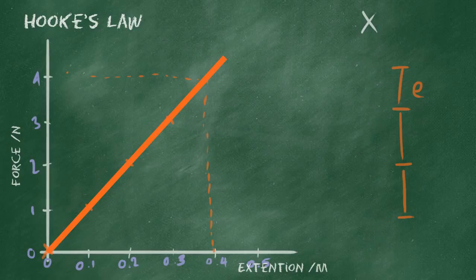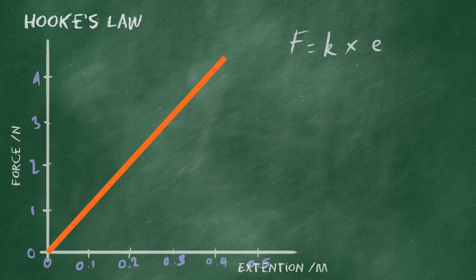Well, we can do more with that, though. We can actually use this relationship to calculate something else. Something which is called the spring constant. Now this is the equation for Hooke's law, because we can express Hooke's law in two ways. We can express it as the proportional graph, or we can express it as the equation F equals K times E. Force is the spring constant times the extension.